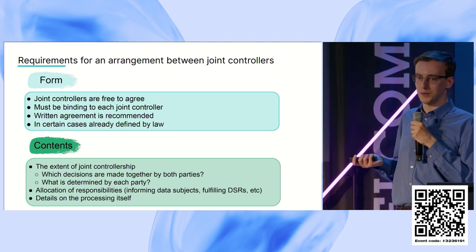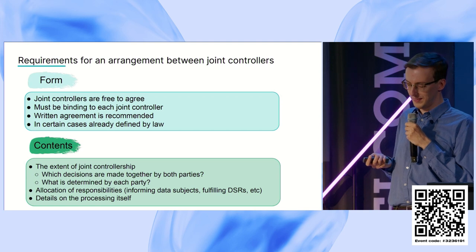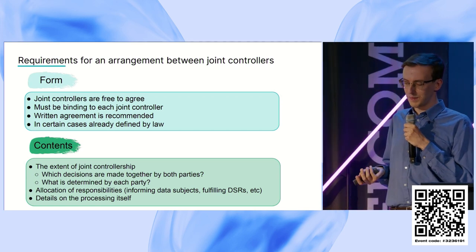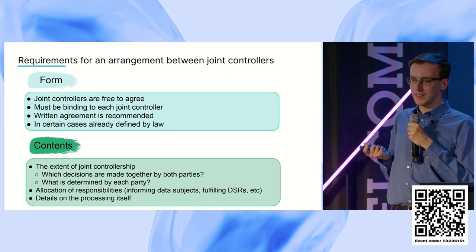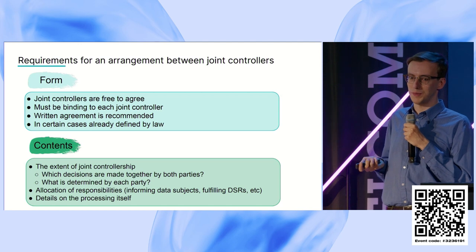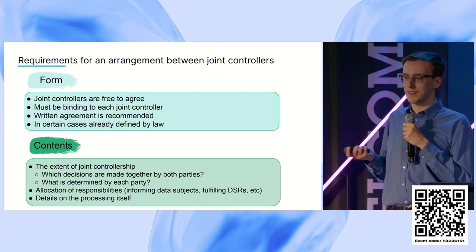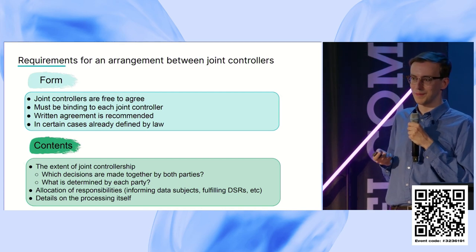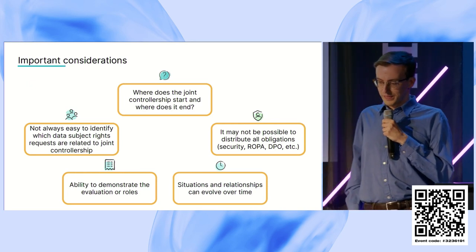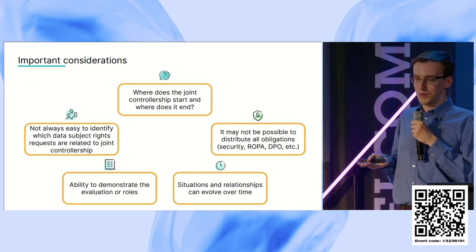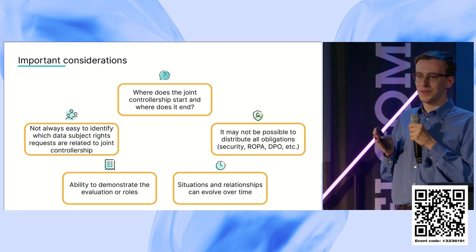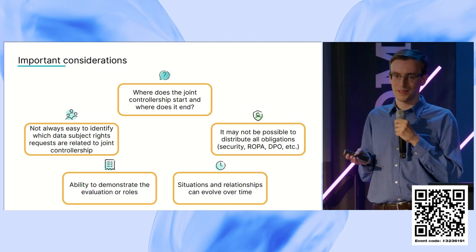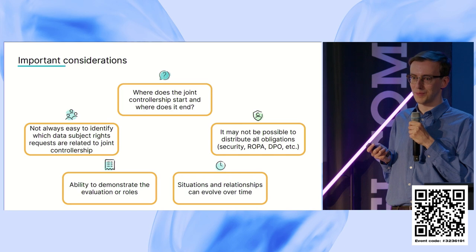The contents are mostly free for joint controllers to decide, but there are some limitations. What must be set up is who is responsible for informing data subjects and who manages data subject rights requests. These are mandatory parts of a joint controllership agreement. A key question is always where the joint controllership starts and ends — which part is really joint controllership — and it's a good idea to define that as much as possible in the agreement.